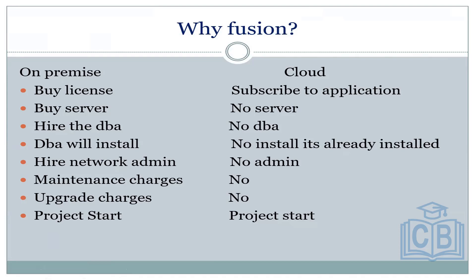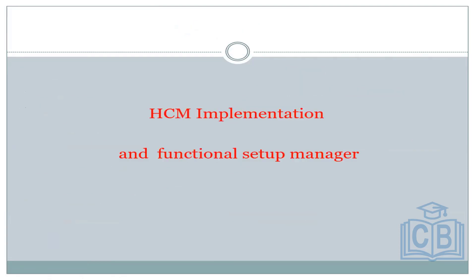Why Fusion? On-premise means you buy a license, buy a server, hire a DBA to install, hire a network admin — there are maintenance charges, upgrade charges. In cloud, you just subscribe to the application: no server, no DBA, no installation, no admin charges, no update charges — the project automatically starts. Everything is done by Oracle. In EBS on-premise, you have to do patching, cloning — everything. In cloud, nothing of that is involved.